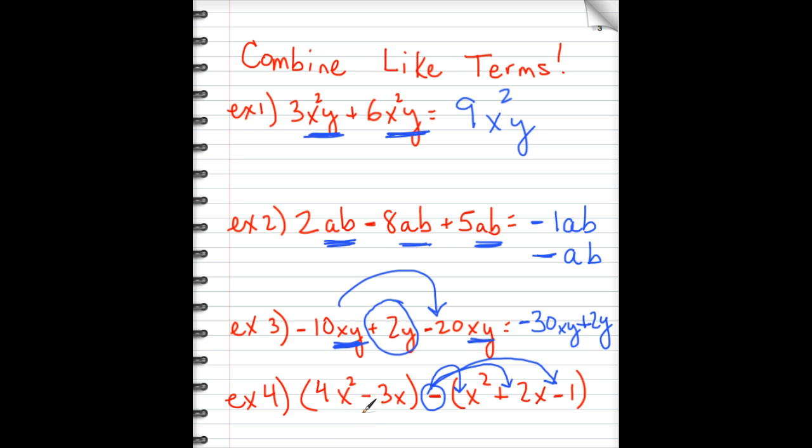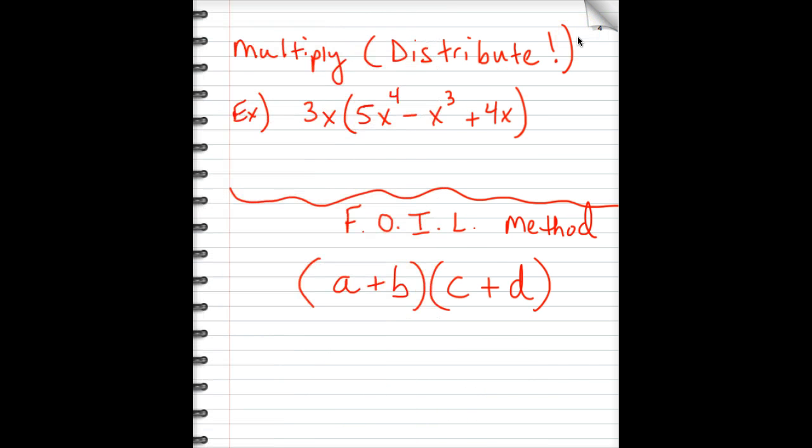So we have 4x² minus x² brings us down to 3x². We have a negative 3x minus 2 more x, which is minus 5x. And then we have minus a negative 1. Minus a negative is the same as plus, so this is plus 1.